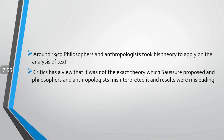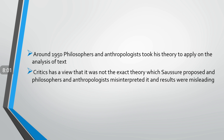Around 1950, philosophers and anthropologists took his theory to apply it to the analysis of text. They tried to explore the utility of Ferdinand de Saussure's theory by applying it to their texts — examining how structures are found and how the structures of language work in written text. But the results were not very good. Critics argued that it was not the exact theory Saussure proposed, and that philosophers and anthropologists misinterpreted it, leading to misleading results because they did not apply the same theory with the same rules.